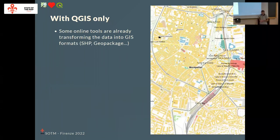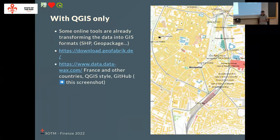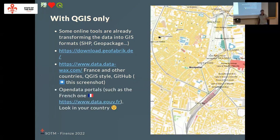You can use some online tools which transform data from OpenStreetMap to GIS data. The most famous one would be download.geofabrik.de — you can download the data as shapefiles. There are various websites proposing this kind of transformation. One is DataWax, which I use — it covers France, but not only; there are also other countries, especially in Africa. The nice thing about DataWax is that it includes QML QGIS symbology, so you open a project and already have the colors and labels. You can also find OSM datasets in your national open data portals.